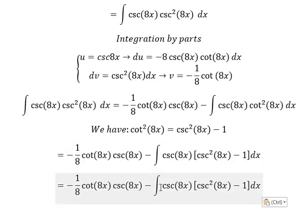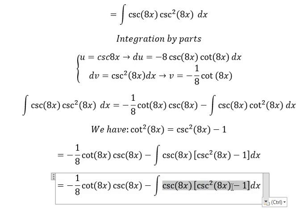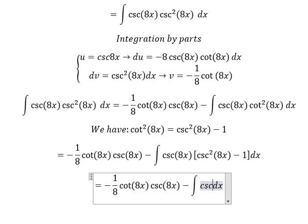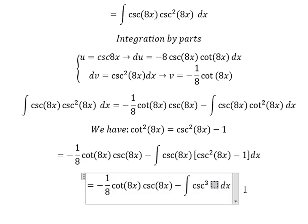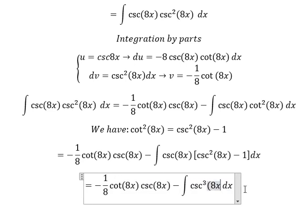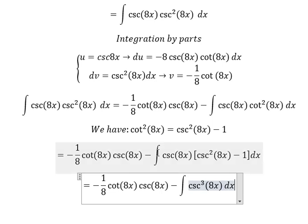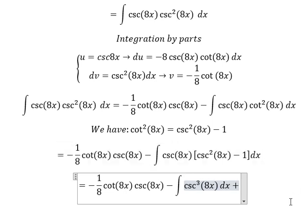So we have negative csc²(as), and then we get csc³(as). Negative times negative gives positive, and we have the integration of csc(as) ds.